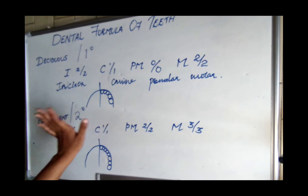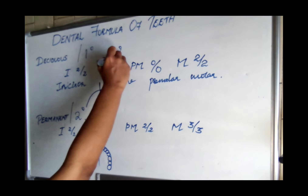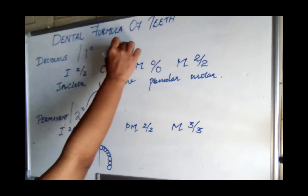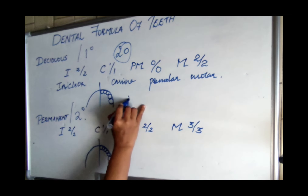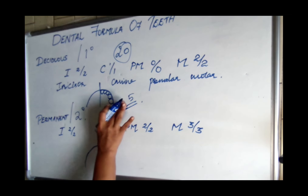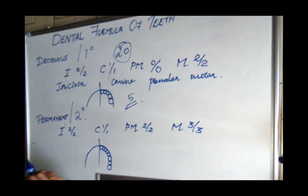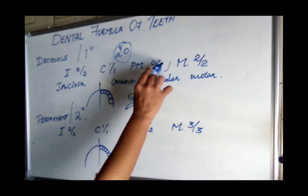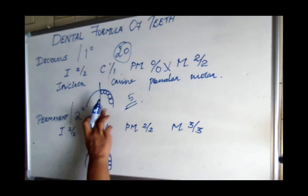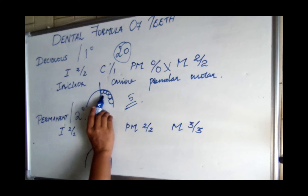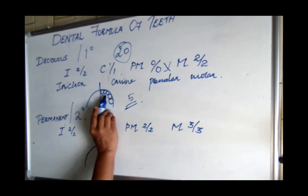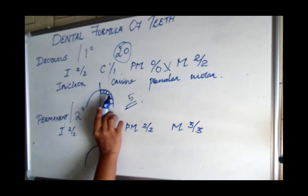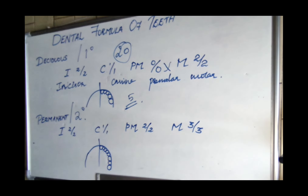In deciduous dentition, we have twenty teeth and five in each quadrant. Of these five: two incisors (central and lateral), one canine, no premolar, and two molars (first and second molar).